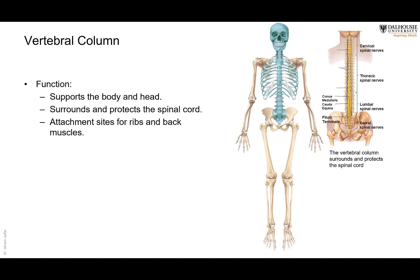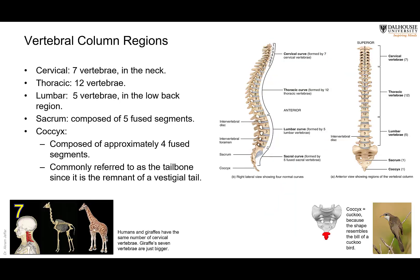The vertebral column supports the body and head. The occipital bone articulates with the first cervical vertebra, called the atlas — hence the joint is called the atlanto-occipital joint. The vertebral column surrounds and protects the spinal cord, as the brain continues with the spinal cord through the foramen magnum. It also provides attachment sites for the ribs and muscles.